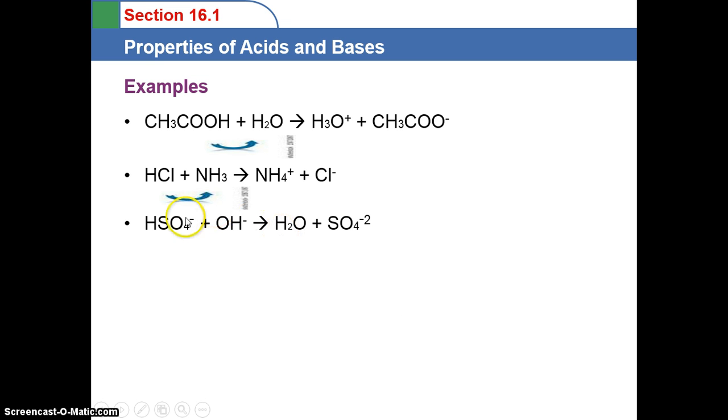Now H2SO4 is sulfuric acid, and it has two hydrogens it can give off. So in this case, what we have is HSO4-, so it's already lost one of its hydrogens. It still has a negative charge and it still has a hydrogen to give up. The OH- is our base because it's going to be the hydrogen acceptor, the proton acceptor, and HSO4- is the proton donor. So we have the acid and its conjugate base, and we have the base and its conjugate acid.